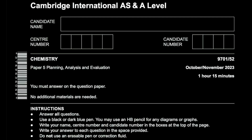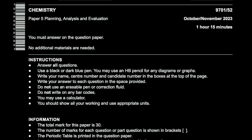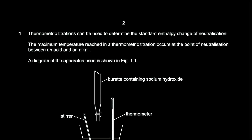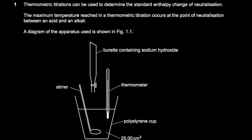Today we're going to be solving October/November 2023 Paper 52. Question one says: thermometric titrations can be used to determine the standard enthalpy change of neutralization. The maximum temperature reached in a thermometric titration occurs at the point of neutralization between an acid and an alkali.